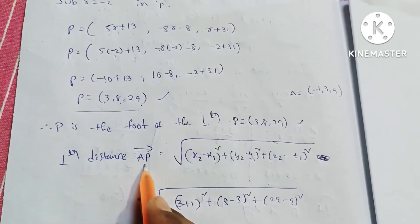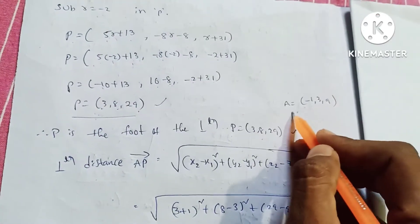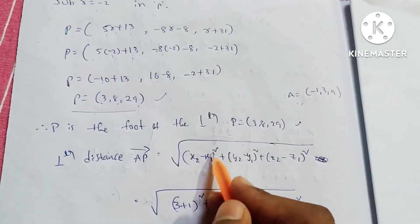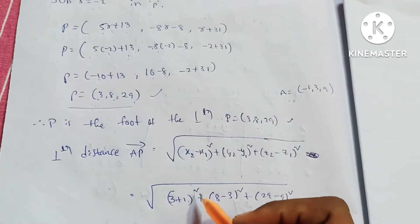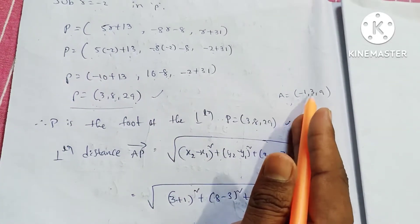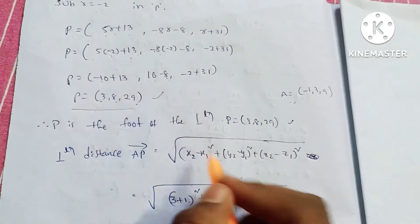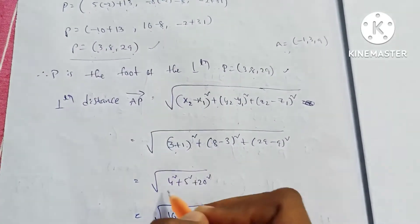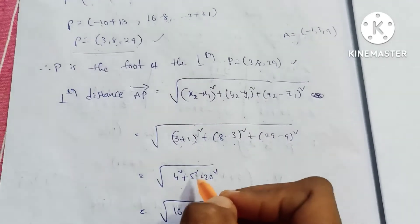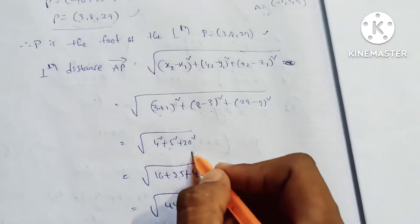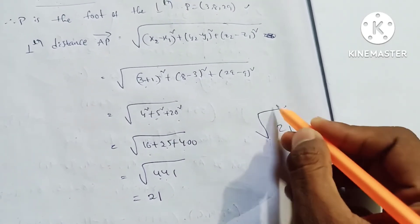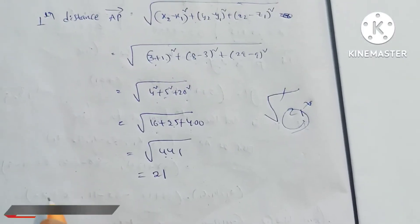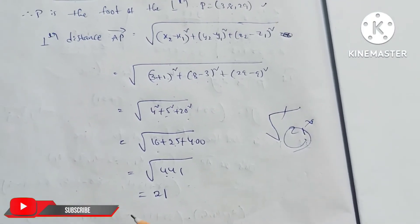Now calculating the perpendicular distance AP. The formula is the square root of (x2 minus x1) squared plus (y2 minus y1) squared plus (z2 minus z1) squared. Substituting A(minus 1, 3, 9) and P(3, 8, 29): root of (3 minus (minus 1)) squared plus (8 minus 3) squared plus (29 minus 9) squared equals root of 16 plus 25 plus 400 equals root of 441 equals 21. Therefore the perpendicular distance AP is 21.